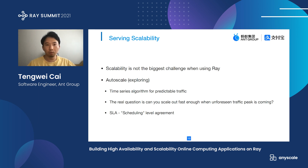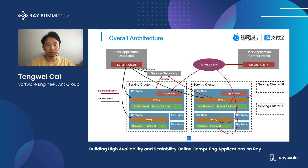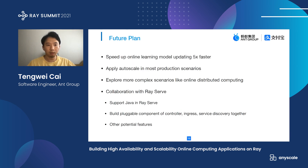In conclusion, we introduced the cross-cluster architecture, cross-cluster service discovery, state persistence, in-place update, and more, to build our serving system — a robust and flexible platform. For now, it has a scale of over 20,000 CPUs and over 3,000 Kubernetes pods. We serve more than five different large scenarios in both Ant Group and Alibaba. In the future, we plan to speed up online learning model updates five times faster and apply auto-scale strategies in most production scenarios.